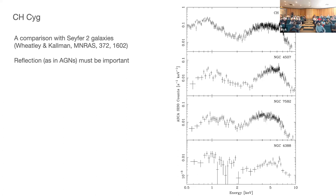After I started this project, I found a paper by Wheatley and Coleman who were the first to suggest that CH Cygni had spectral properties very similar to AGNs. Here's CH Cygni on top and three different Seyfert 2 galaxies. You can see the others resemble what I will show you with AGNs. They have a model I won't discuss here because I do not agree with it — they suggest that all of the emission is produced by the reflection model.